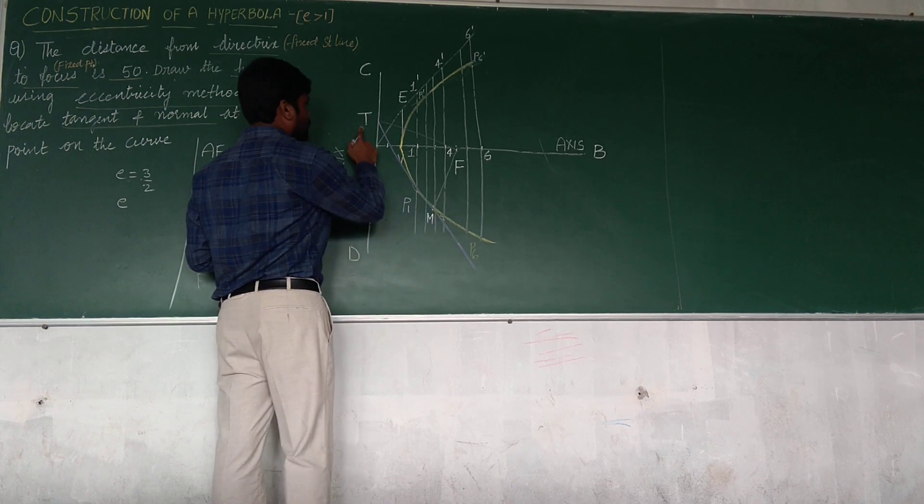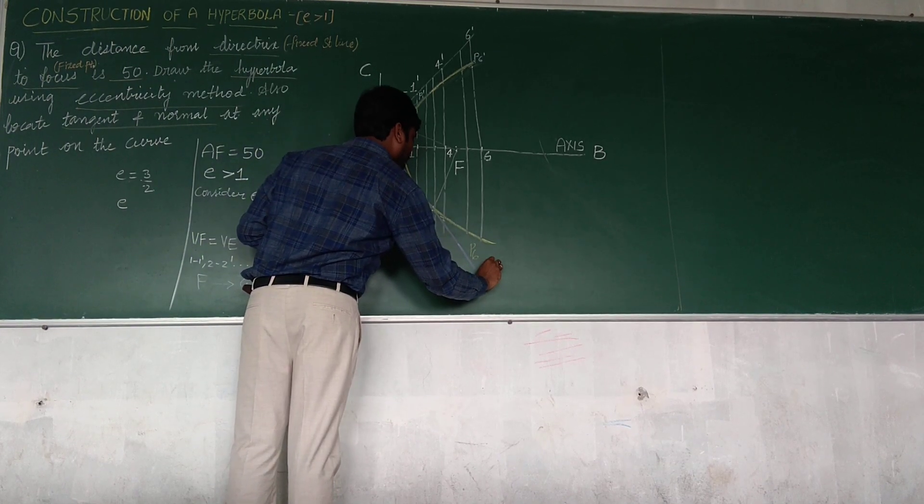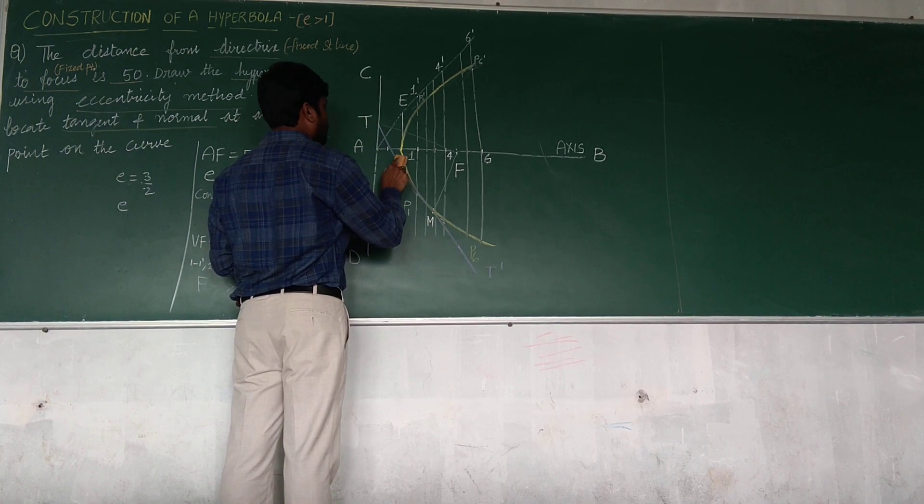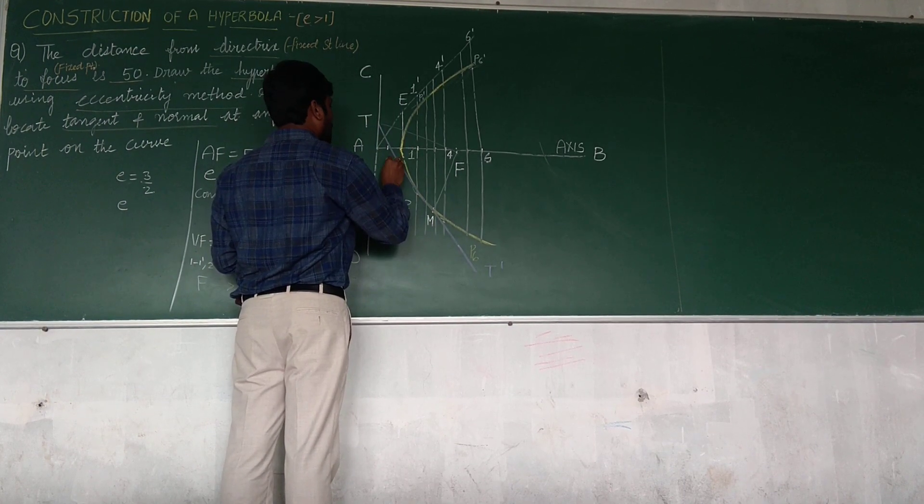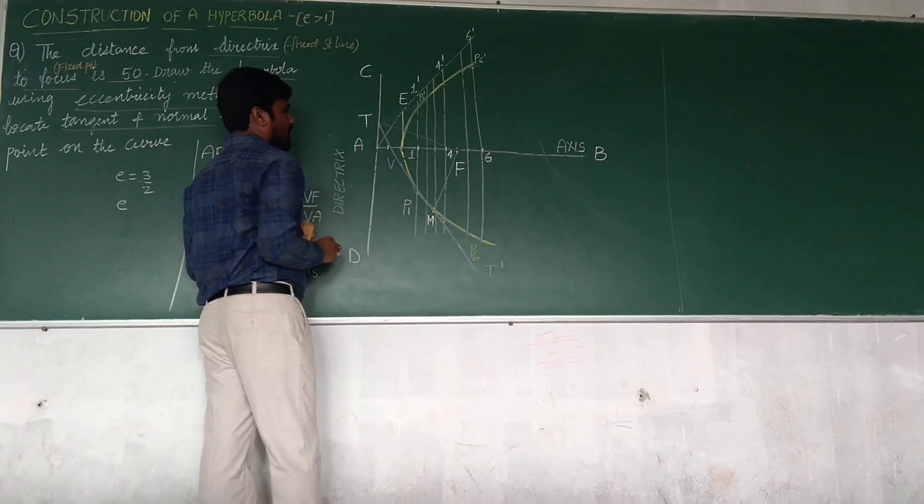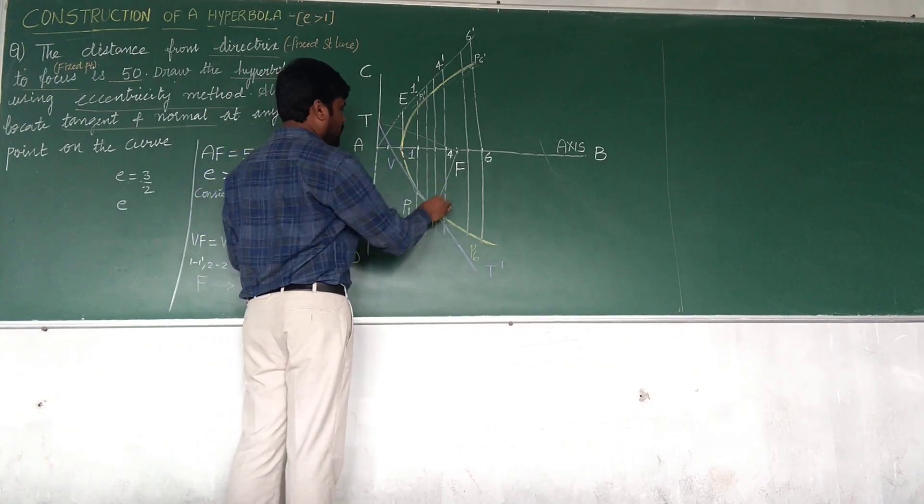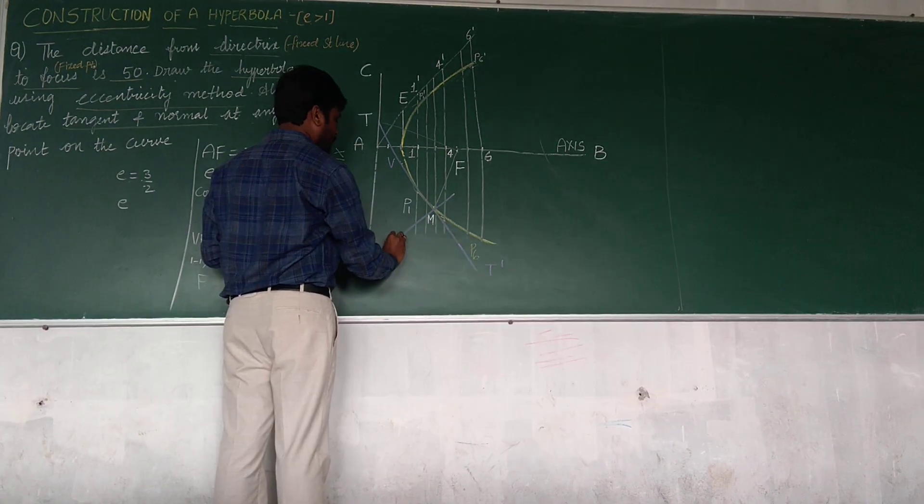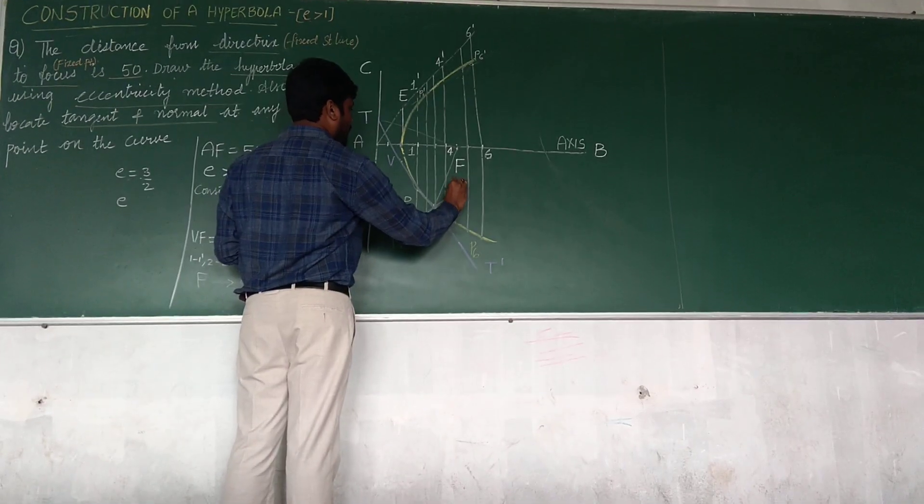Then with HB pencil, draw a line from T touching M, passing through it. So this is T and this is my T dash. T dash is tangent. This is a vertex, and perpendicular to tangent, 90 degree from this point is normal. So this is N, N dash.